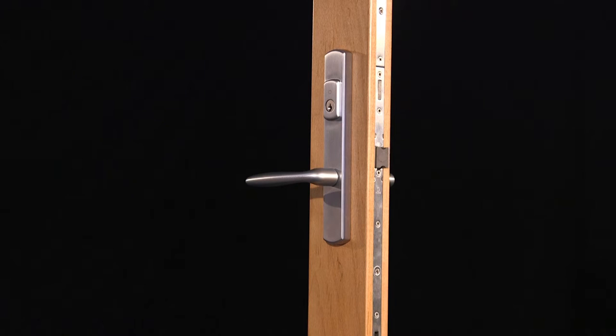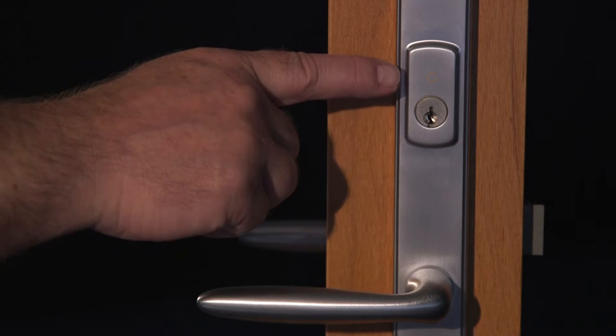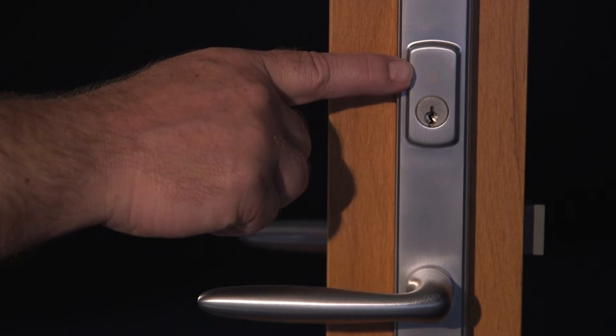First, be certain that you are working with the famous HOPPA HLS-7 series multipoint lock. You can be certain if you see the trademarked symbol on the side of the high-quality stainless steel lock and backplates of the handle sets.